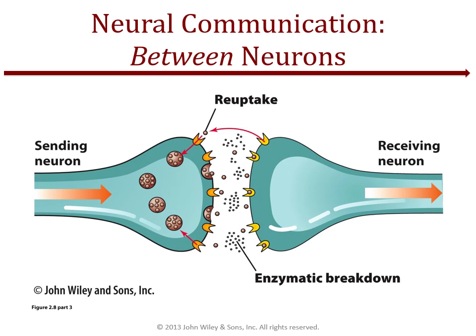Given that some neurons have thousands of receptors responsive only to specific neurotransmitters, what happens to excess neurotransmitters or those that don't fit into the adjacent receptor sites? The sending neuron will normally reabsorb that excess — a process called reuptake — or they might get broken down by enzymes.